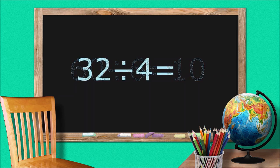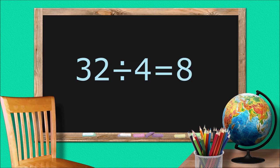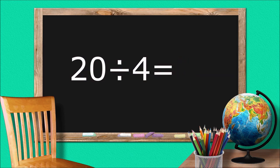32 divided by 4 equals 8. 20 divided by 4 equals 5.